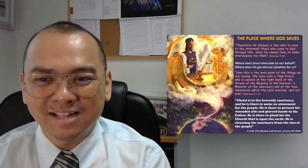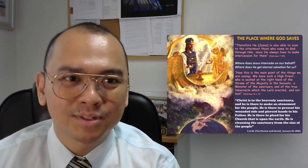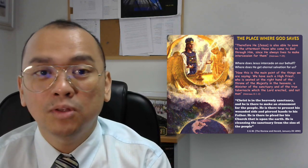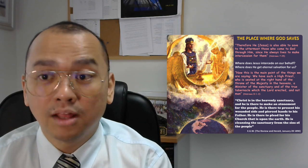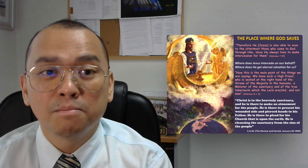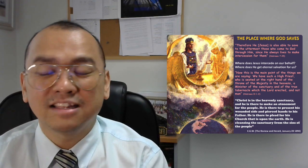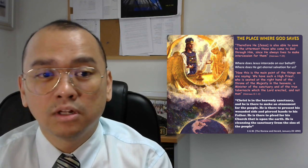And the heavenly sanctuary is the place where God saves. Hebrews 7, verse 25 says: Therefore He, Jesus, is also able to save to the uttermost those who come to God through Him, since He always lives to make intercession for them. So where does Jesus intercede on our behalf? And where does He get eternal salvation for us? Hebrews 8, 1-2 says: Now this is the main point of the things we are saying. We have such a high priest who sits at the right hand of the throne of the majesty in heaven, a minister of the sanctuary and of the true tabernacle which the Lord erected, and not man.